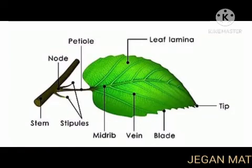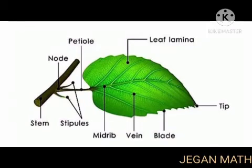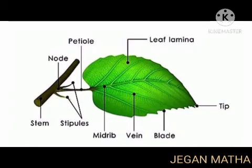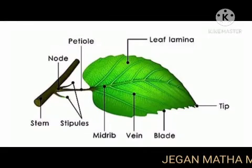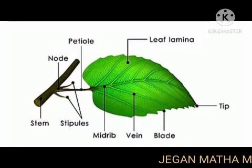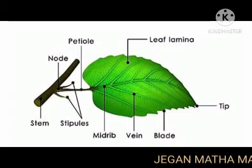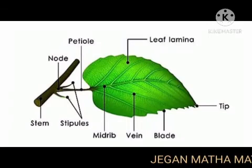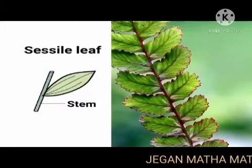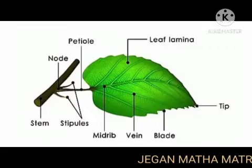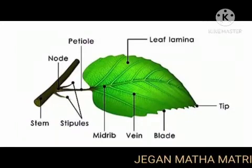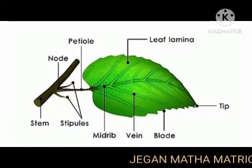Petiole is otherwise called stipe or mesopodium. It is a bridge between the lamina and the stem. The petiole or leaf stalk is a cylindrical, sub-cylindrical, or flattened structure of a leaf which joins the lamina with the stem. A leaf with a petiole is said to be petiolate, example Ficus, Hibiscus. Leaves that do not possess a petiole are said to be sessile, example Calotropis.